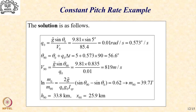q0, which is g̃ sin θ₀ / v0, comes out to be 0.01 rad/s, which converts to 0.573 degrees per second. Knowing q0 and θ₀, we know θ at 90 seconds: θ₀ + q0 · Δt = θ₀ + q0 · 90, which gives an angle of 56.6 degrees. So this particular trajectory, when executed, will result in an inclination from vertical of 56.6 degrees at the end of 90 seconds.